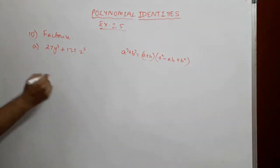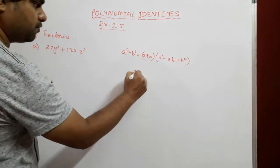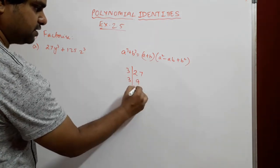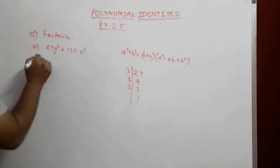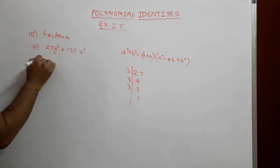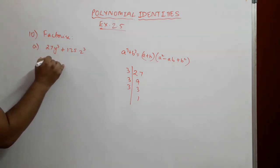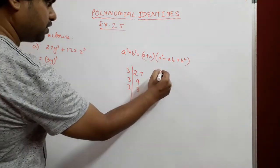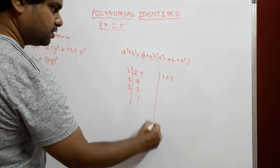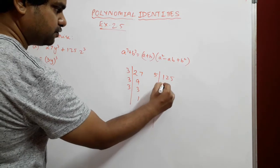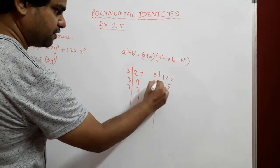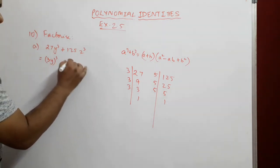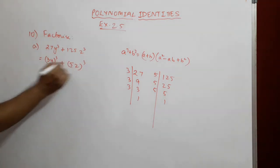27, if we factorize, we get 3 × 3 × 3, so 27y³ can be written as (3y)³. And 125, if we factorize, we get 5 × 5 × 5, so 125z³ can be written as (5z)³.